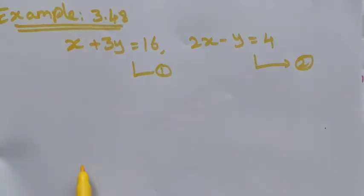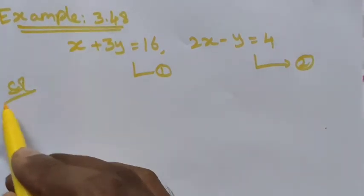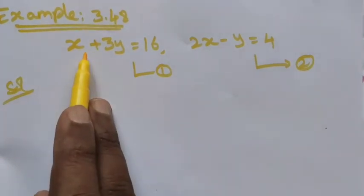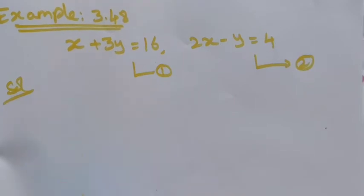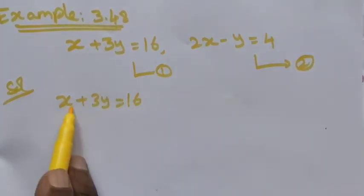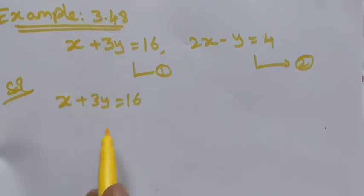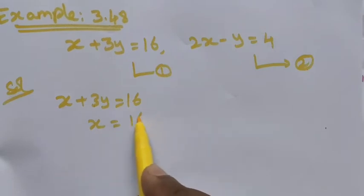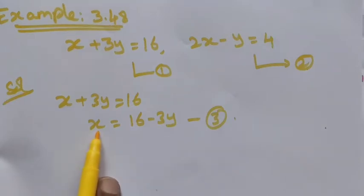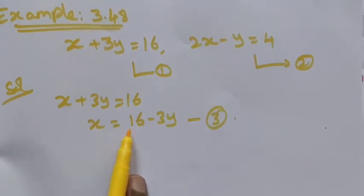From equation number one or two, we can choose any one to find the value of either x or y. Here I am going to use equation number one to find the value of x. So x plus 3y is equal to 16 — I take 3y to the other side, so we get x is equal to 16 minus 3y. Let me take it as equation number three.